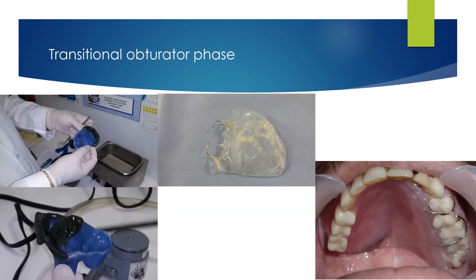During the healing phase of the defect, a transitional interim obturator will be prepared and given to the patient. The transitional obturator can be fabricated with or without teeth, depending on the patient's needs and desires.